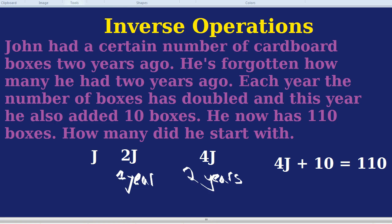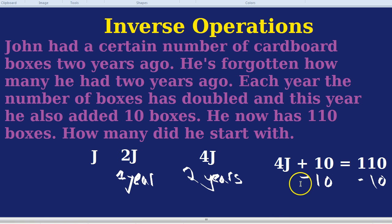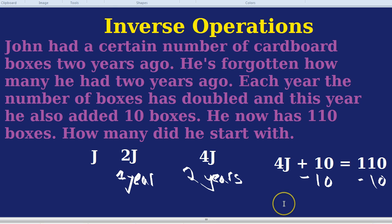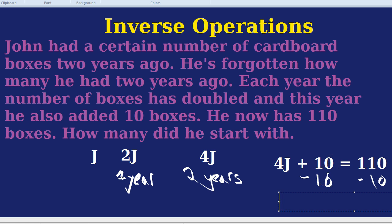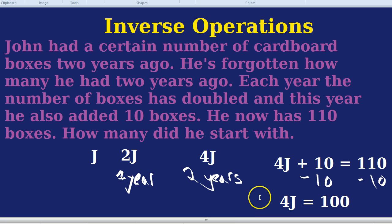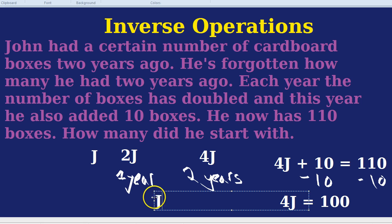Let's go backwards. Let's first get rid of that plus 10, which was the last thing he did. The way to get rid of plus 10 is minus 10, and you must always minus 10 from both sides. The plus 10 disappears because we have a minus 10, so we're left with 4j equals 100. The inverse of multiplying by 4 is dividing by 4, and 100 divided by 4 is 25. The mystery is solved — he had 25 boxes.